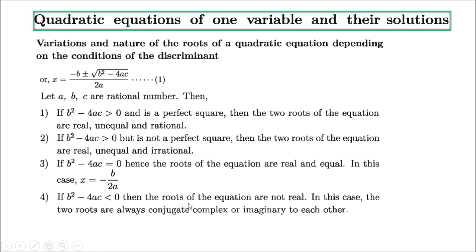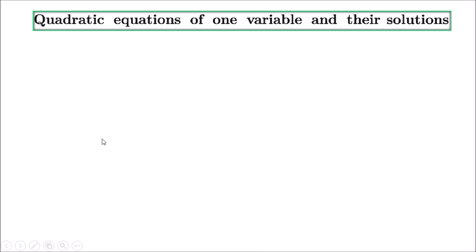If b² − 4ac < 0 — meaning it is a negative number such as −1, −2, −3 — then the roots are not real; they become imaginary numbers. This topic of imaginary numbers is covered in intermediate-level studies. For class 9 and 10, we just note that when the discriminant is less than 0, the two roots are always conjugate complex or imaginary numbers.